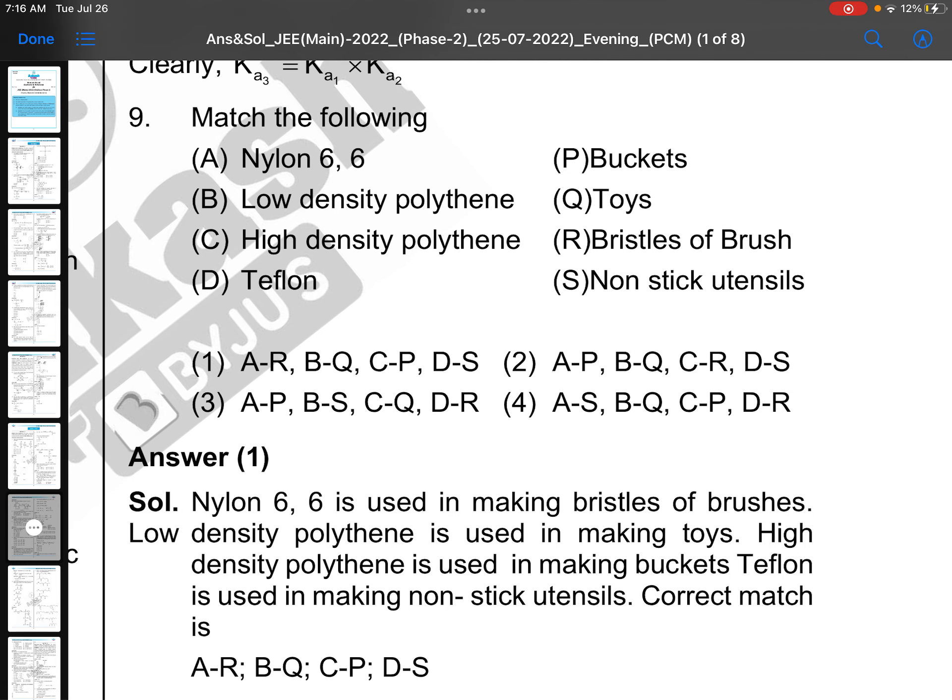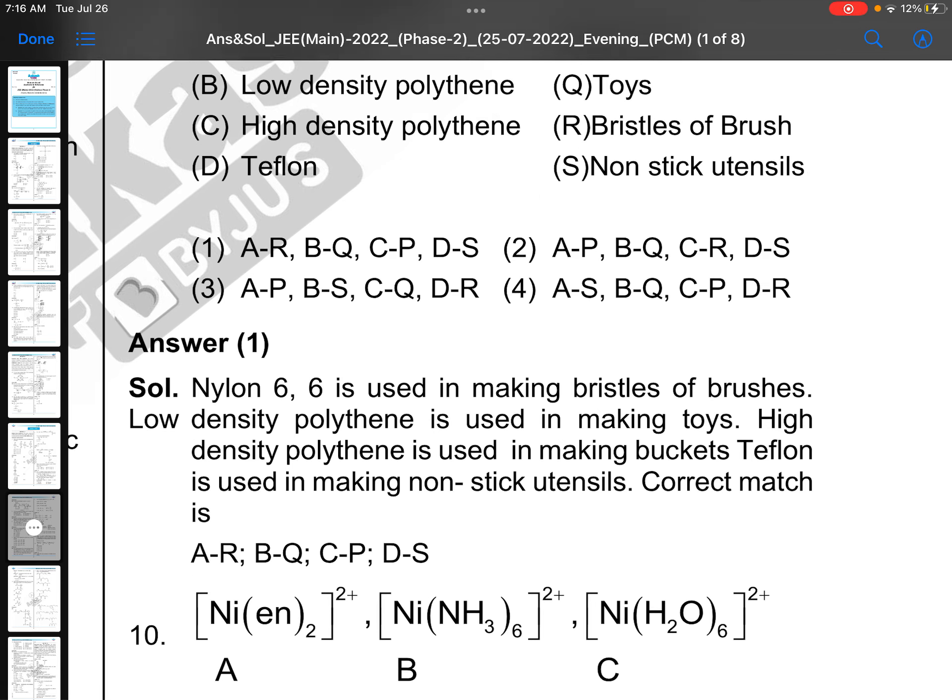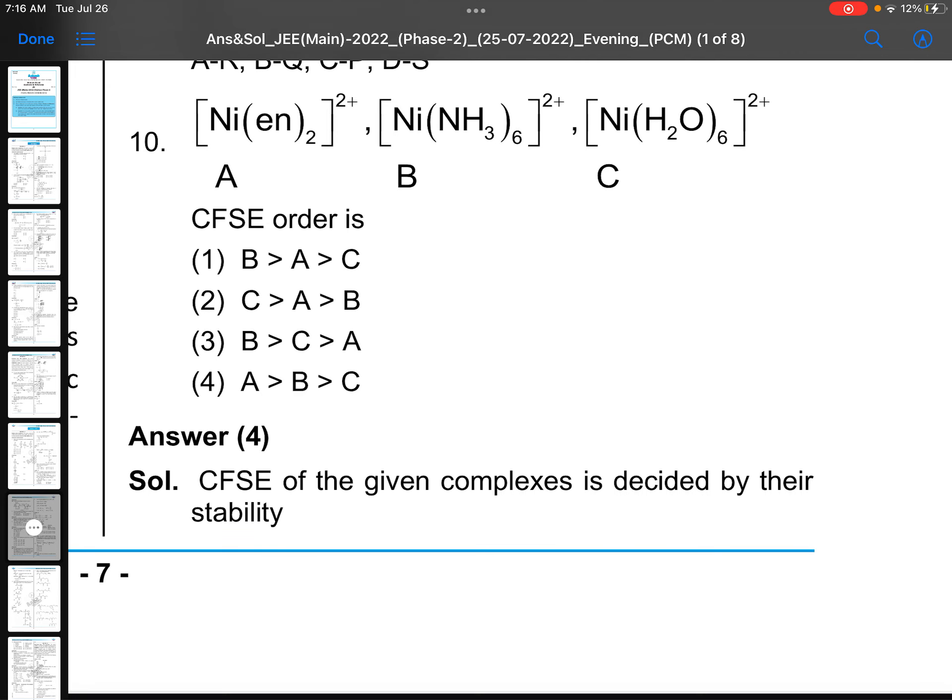Simple chemical equilibrium question, that is match the following. Nylon-66 is used for bristles of brush, low density polyethylene is for toys, high density polyethylene is for buckets, teflon is for non-stick utensils. Polymers, memory, no logic.